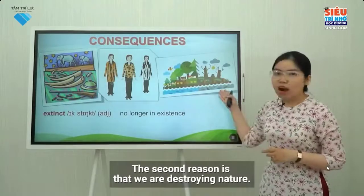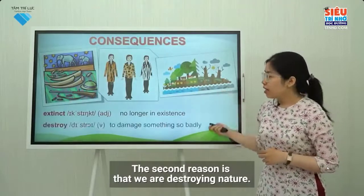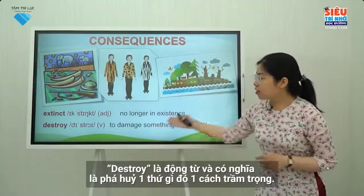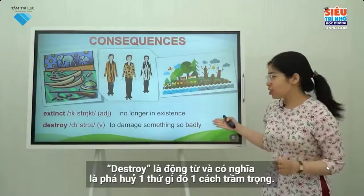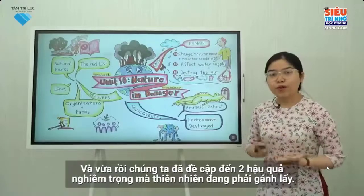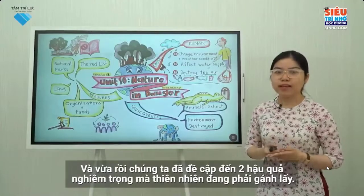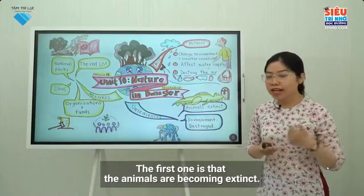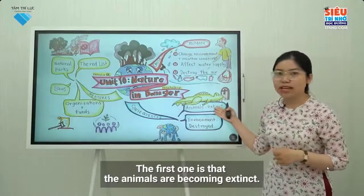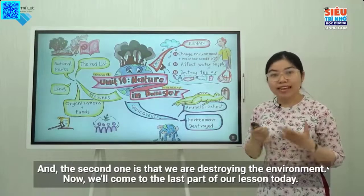The second consequence is that we are destroying nature. The word destroy is a verb. It means to damage something so badly. We've just mentioned the two serious consequences that we have to deal with: the first one is that the animals are becoming extinct, and the second one is that we are destroying the environment.